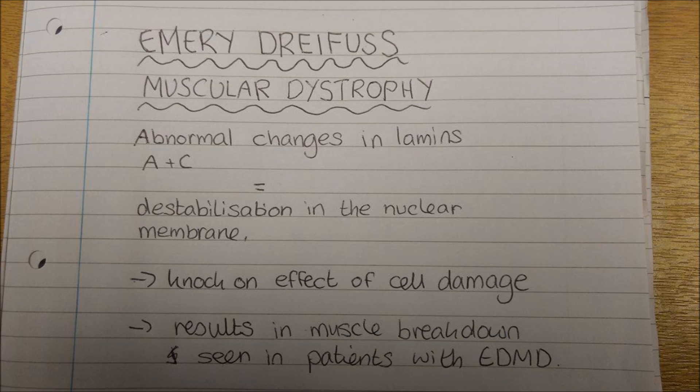This is because the lamina plays a key role in supporting the nuclear envelope, and when nuclear envelopes are destabilised, it may cause a knock-on effect of cell damage, which in this case results in a muscle breakdown seen in patients with the disease.